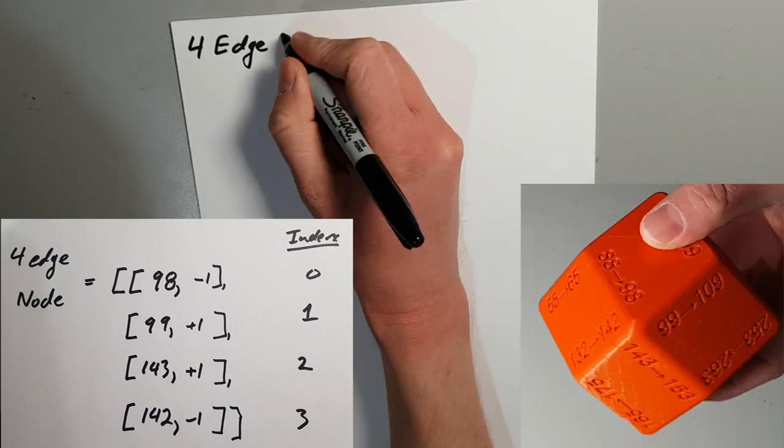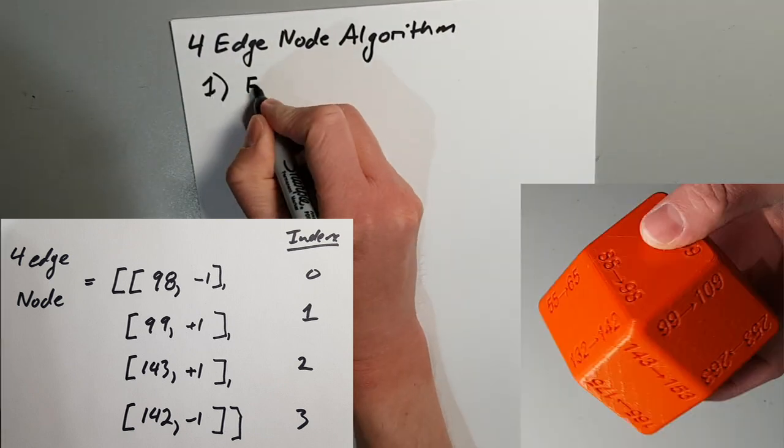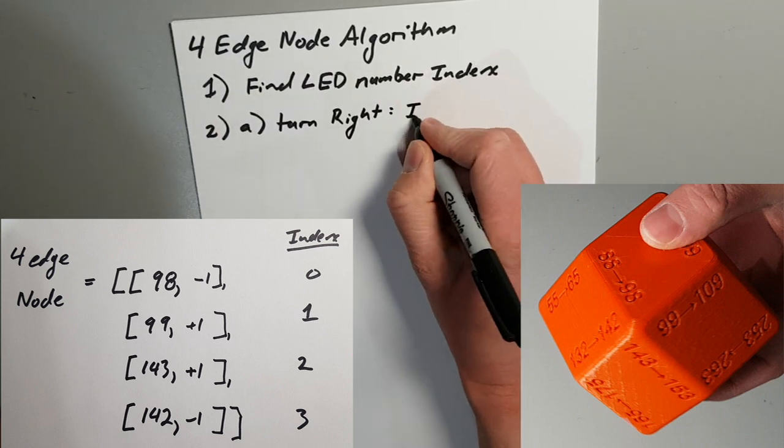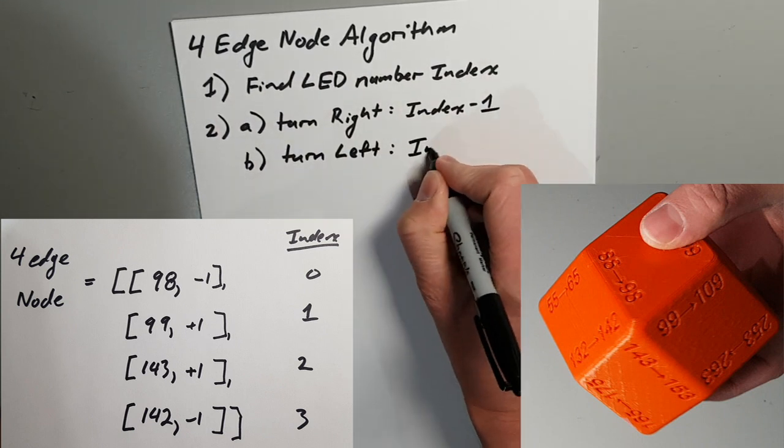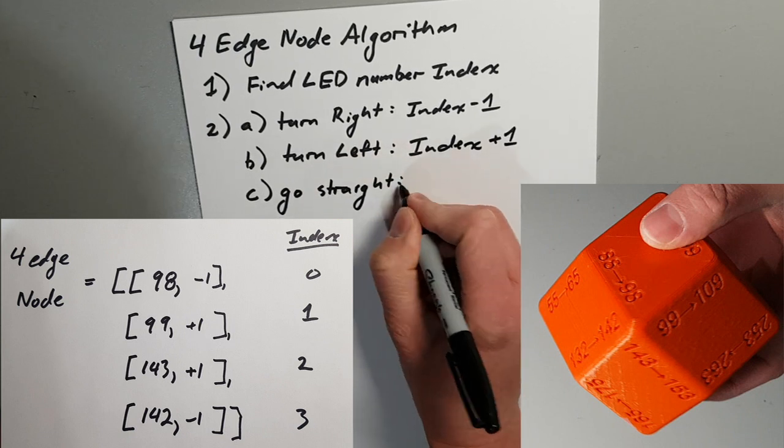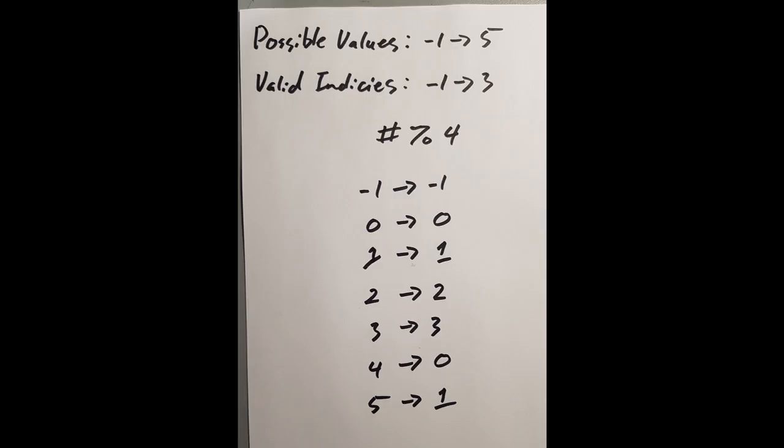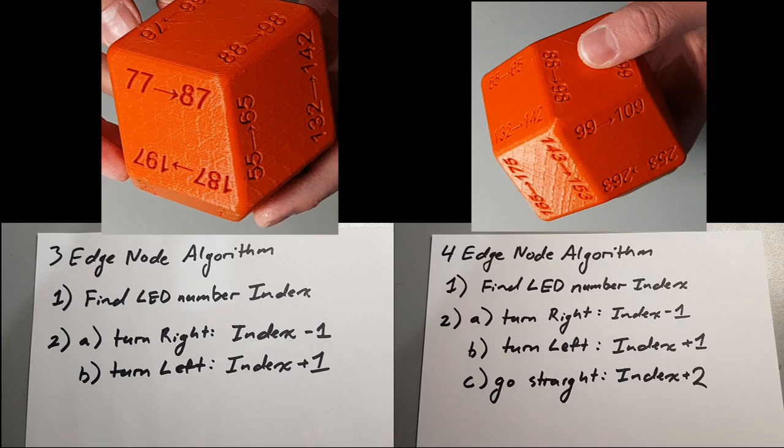The algorithm to progress through this node is very similar to the 3 edge node, but with one new addition at the end. Find the index of the LED: to turn right, minus 1; to turn left, add 1; to go straight, add 2. To ensure that we always have a valid index, we will keep the remainder for the new index divided by 4. It is now possible to traverse the rhombic dodecahedron using these two algorithms and one array for each node.